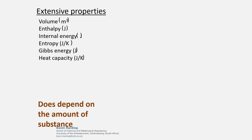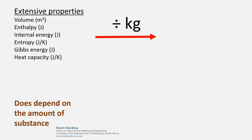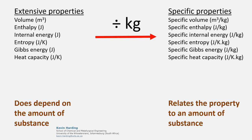Another consideration of certain extensive properties is that we can divide by mass, and we are left with specific properties. While specific properties are derived from extensive properties, not depending on the amount of substance, the result is now a value that is dependent on the amount of substance present. When looking up data in property tables, many of these properties — volume, enthalpy, energies, and heat capacities — are given as specific properties.